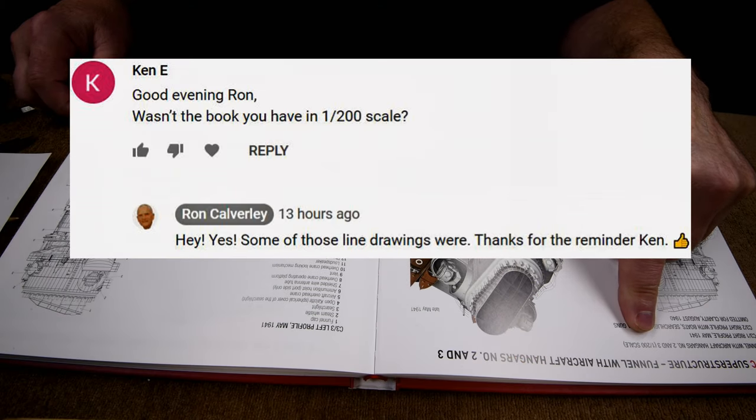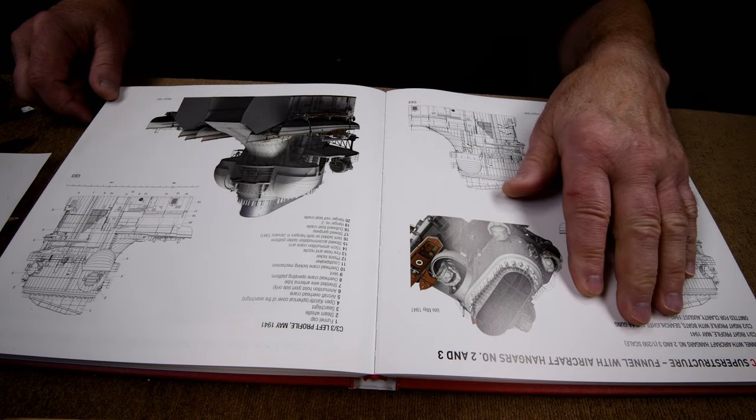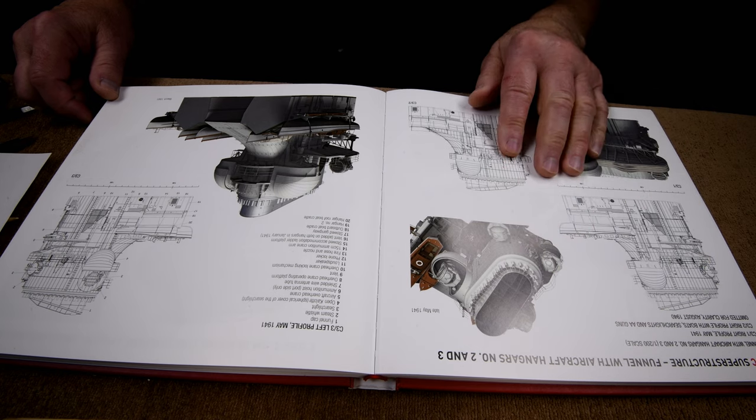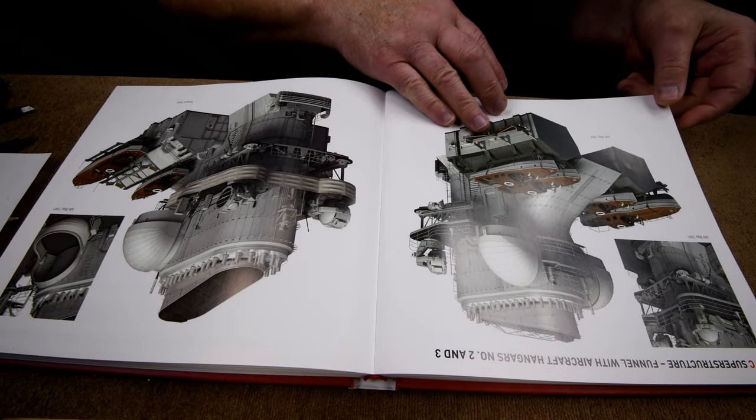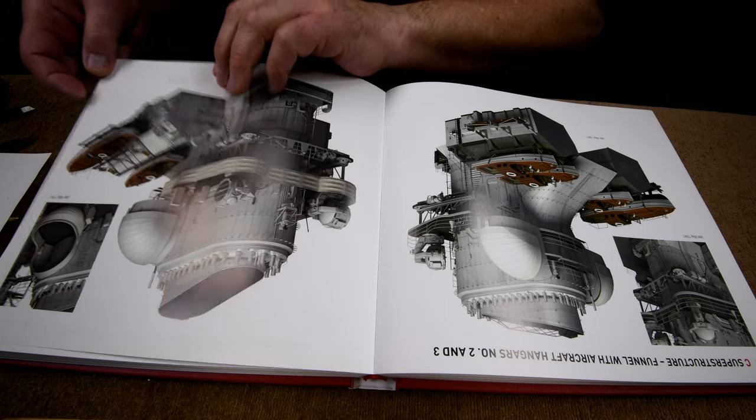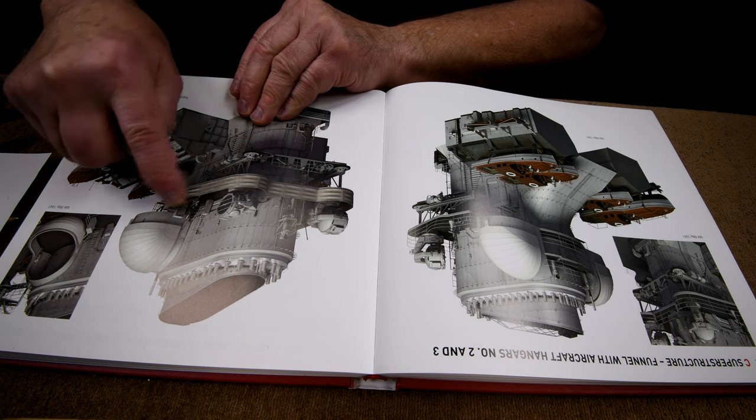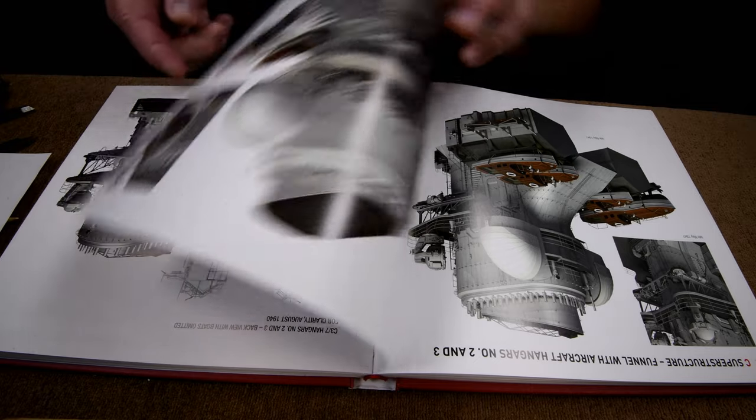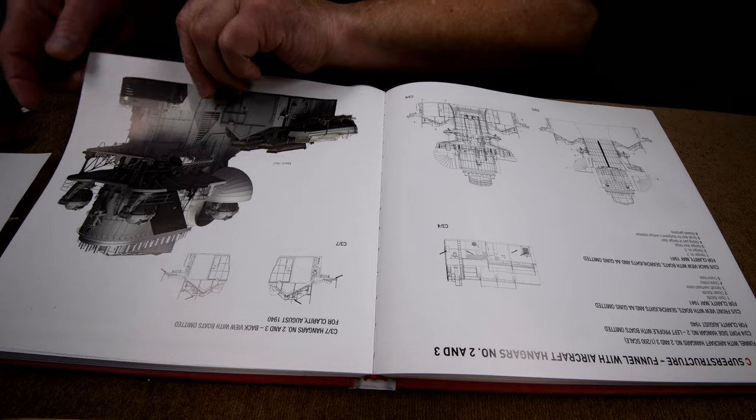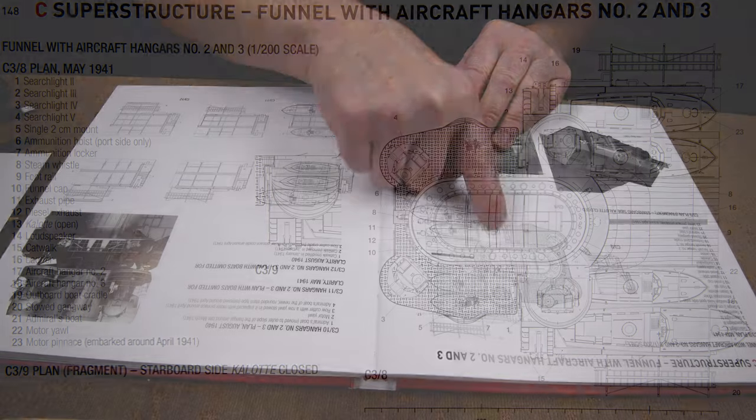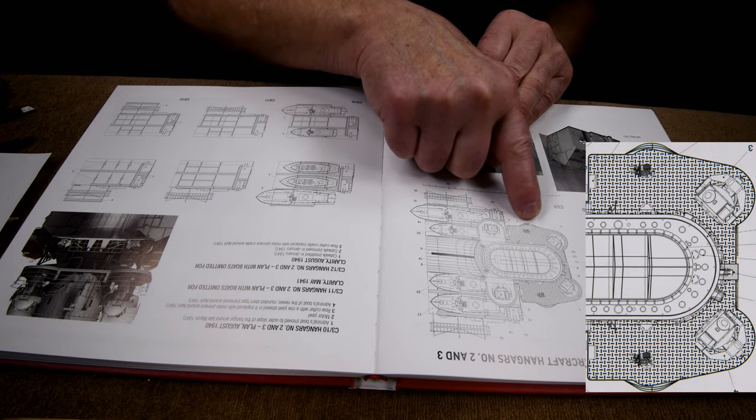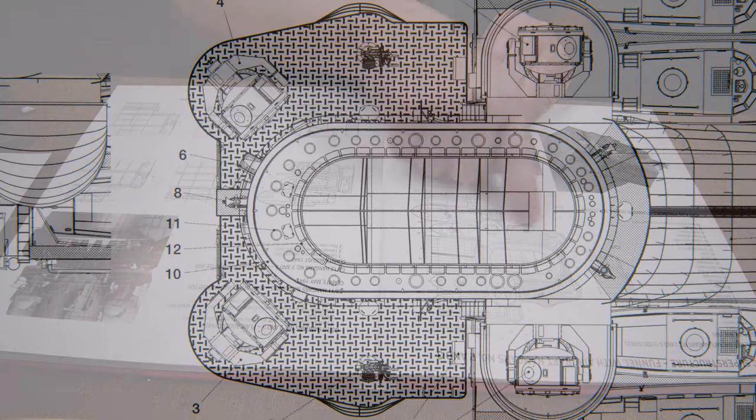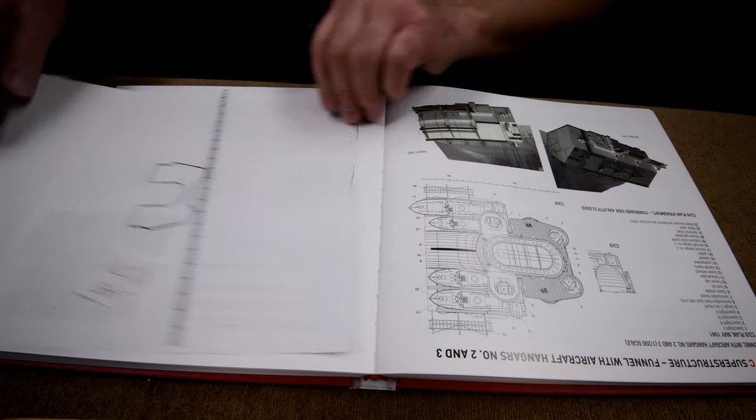In yesterday's comments, one of the viewers reminded me that in Stefan's book, many of the drawings were to the scale of 1 to 200, which is what this Bismarck plastic kit is designed to. So yeah, right, I had momentarily forgotten that, even though I did talk about it some months ago. And so we're here in the superstructure, in the funnel section. This right here is the part that we are going around. It's depicted here with the canvas weather protection around it.